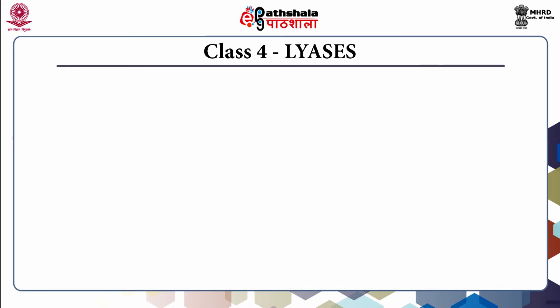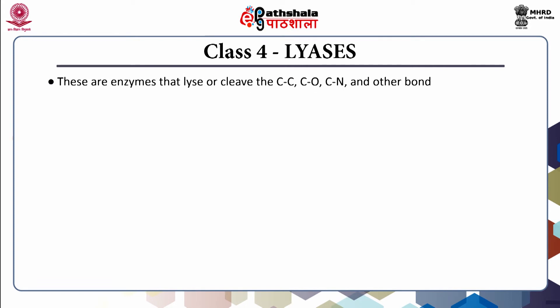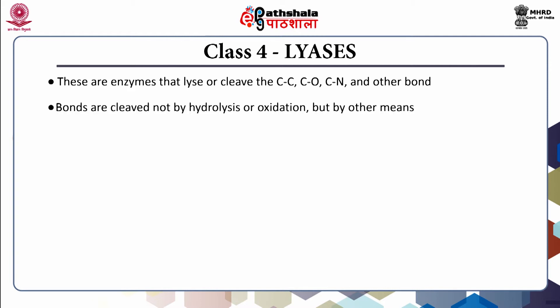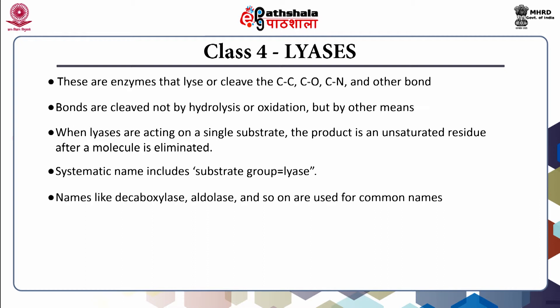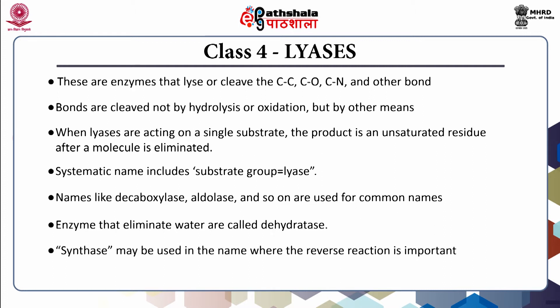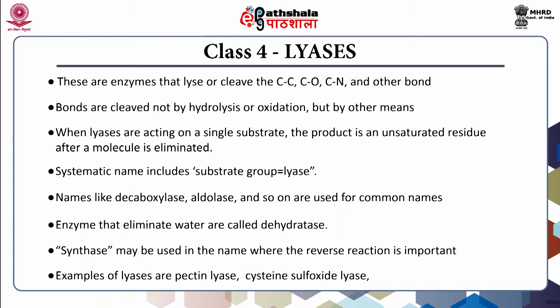Class 4 includes lyases. These are enzymes that cleave carbon-carbon, carbon-oxygen, carbon-nitrogen, and other bonds by means other than hydrolysis or oxidation. When lyases act on a single substrate, the product is an unsaturated residue after a molecule is eliminated. The systematic name includes 'substrate group-lyase.' Common names such as decarboxylase and aldolase are used; enzymes that eliminate water are called dehydratase. Synthase may be used where the reverse reaction is important. Examples include pectin lyase and cysteine sulfoxide lyase.